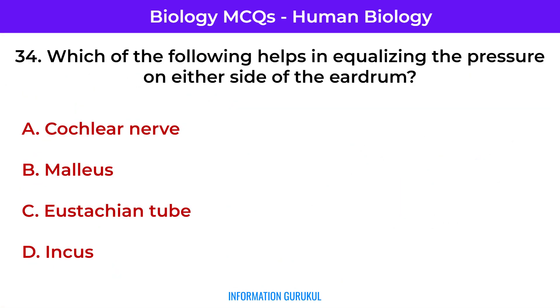Which of the following helps in equalizing the pressure on either side of the eardrum? Eustachian tube.